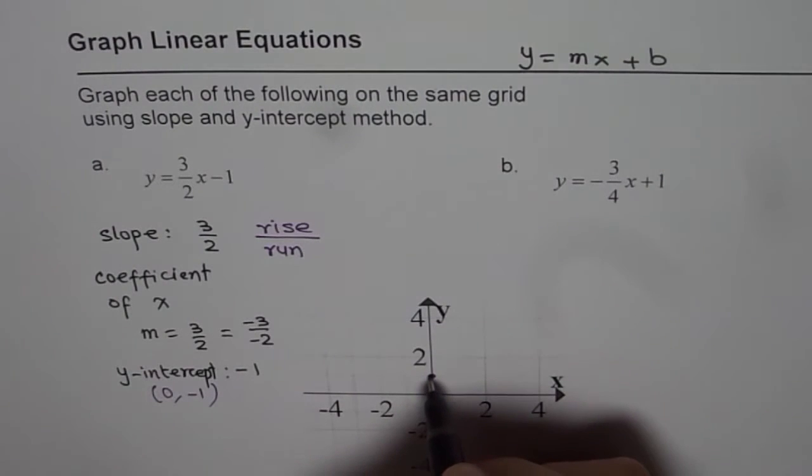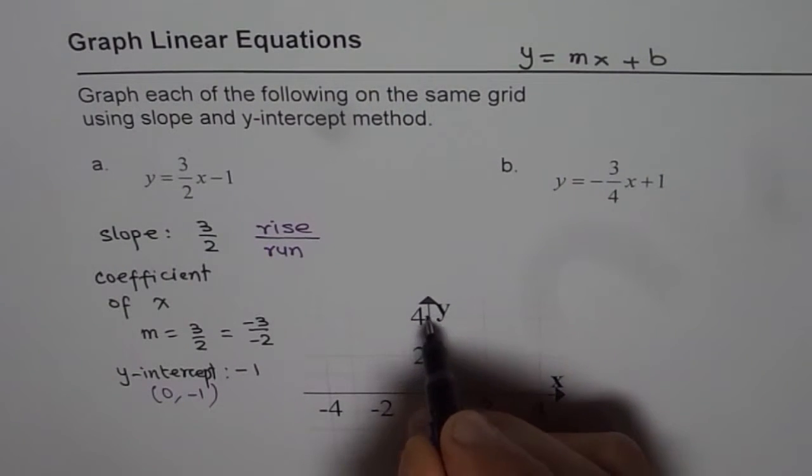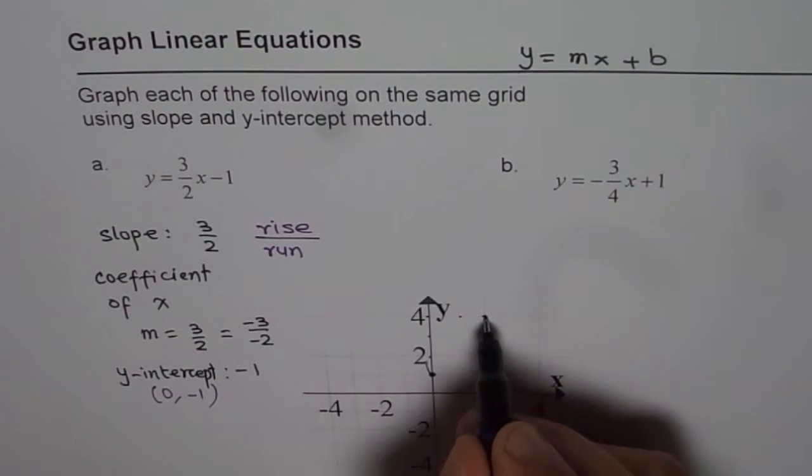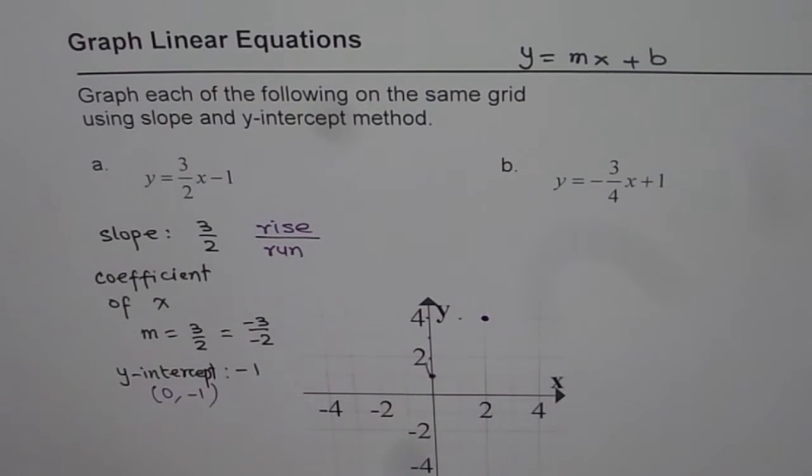3 over 2 means you go up 3. 1, 2, 3, rise. And run of 2. 1, 2. So you get your next point. If you join these two points, you get your line.